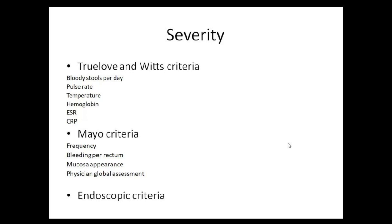Other important criteria include the Mayo criteria, which takes into account stool frequency, bleeding per rectum, mucosal appearance on endoscopy, and the physician's global assessment. Because it depends on both physician assessment and endoscopic appearance, it has slightly lesser importance compared to Truelove and Witts criteria, though it is also standardized. Endoscopic criteria for severity is generally assessed by the medical gastroenterologist.